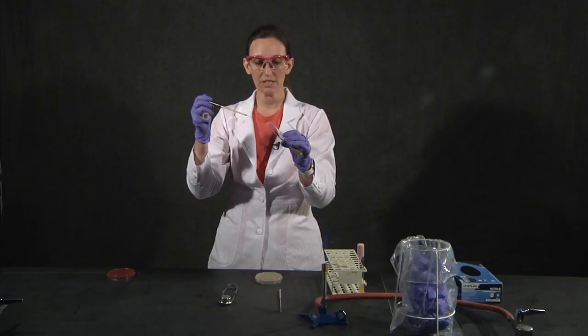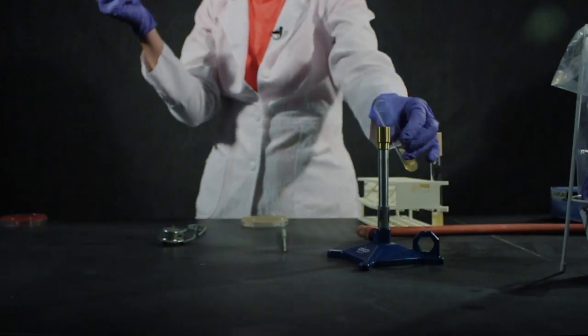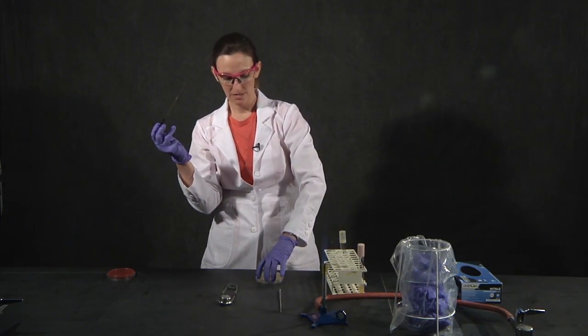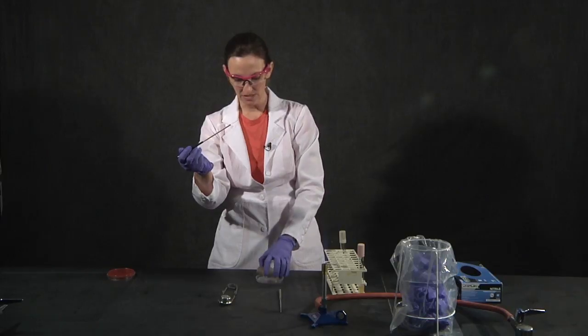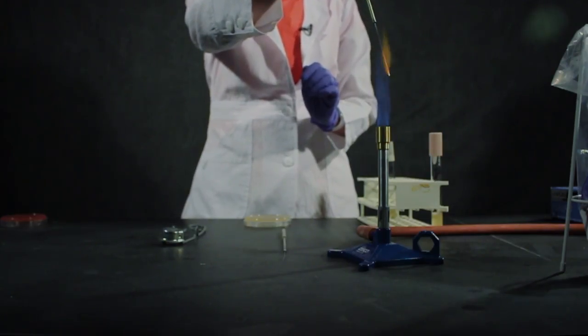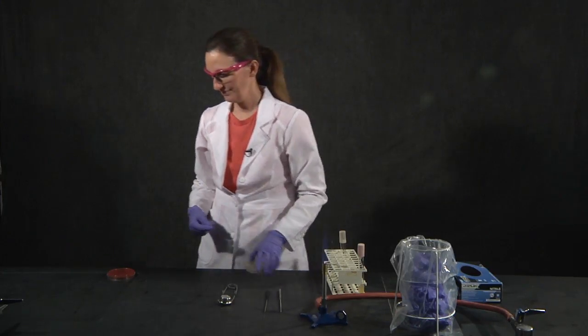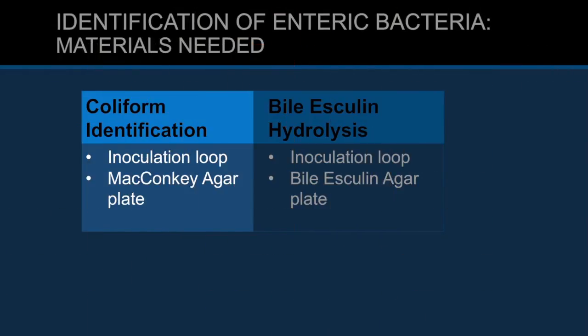I have my organism here — the working stock — and I'm just going to do a straight streak right down the middle. That is going to give me a heavy line of growth. I'm going to incubate that for 24 hours at the optimal growth temperature. The MacConkey agar is a good time to practice your streak for isolation technique because we want to see the color change in individual colonies.